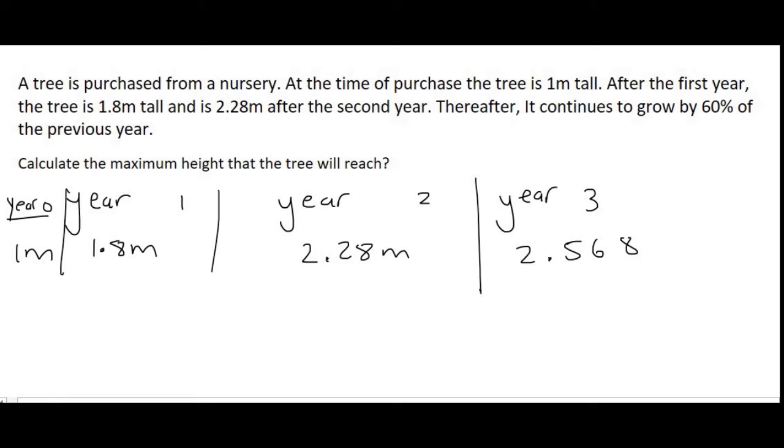The pattern is not going to be formed by looking at the total height of the tree. The pattern is going to be formed by looking at how much the tree grew by each year. So we need to take a look at the growth. From year 0 to year 1, there was growth of 0.8 meters. Then from year 1 to year 2, that's 0.48. And then from year 2 to year 3, there is growth of 0.288. So we could be forming an arithmetic or geometric.